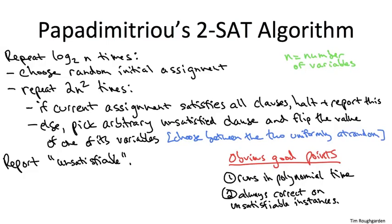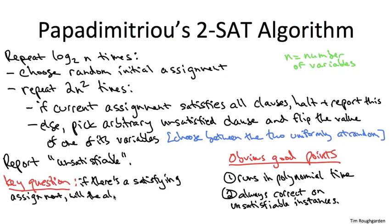But the key question is, what happens on satisfiable instances? If there is somewhere out there in the exponentially big space of assignments one that satisfies all of the assignments, is this algorithm going to find one in its mere 2n squared times log n steps?